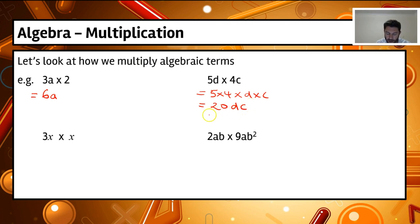Now we'd actually rewrite this to be 20cd, so that the letters are in alphabetical order, just for ease of reading.